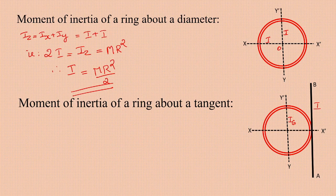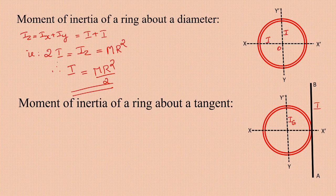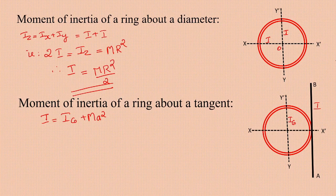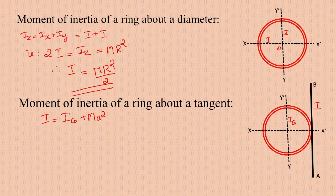The moment of inertia about the diameter YY' (which passes through the center of mass) is Ig = MR²/2, which we already derived. By the parallel axis theorem: I = Ig + MR², where M is the total mass of the ring and R is the distance between the two parallel axes (the radius of the ring).